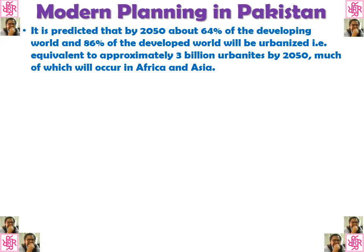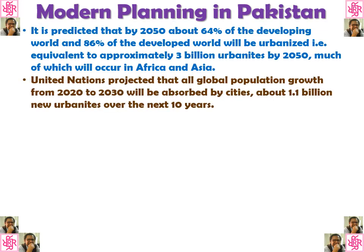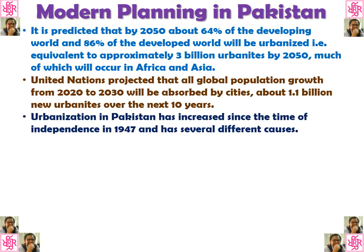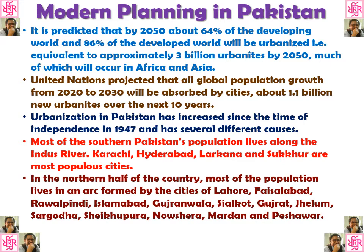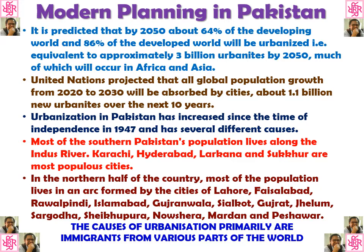It is predicted that by 2050, about 64% of the developing world and 86% of the developed world will be urbanized, equivalent to approximately 3 billion urbanized people by 2050, much of which will occur in Africa and Asia. The United Nations projected that all global population growth from 2020 to 2030 will be absorbed by cities — about 1.1 billion new urban dwellers over the next 10 years. Urbanization in Pakistan has increased since its independence in 1947. Most of the southern Pakistan population lives along the Indus River in cities like Karachi, Hyderabad, Larkana, and Sukkur. In the northern half, most population lives in the arc formed by Lahore, Faisalabad, Rawalpindi, Islamabad, Gujranwala, Sialkot, Jhelum, Sargodha, Sheikhupura, Nowshera, Mardan, and Peshawar.